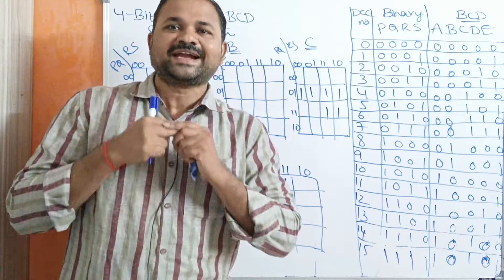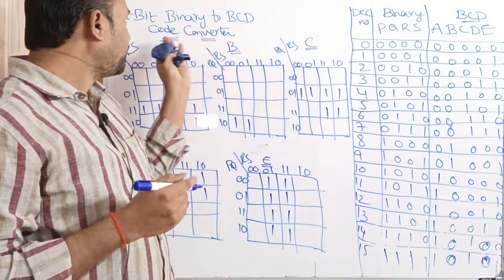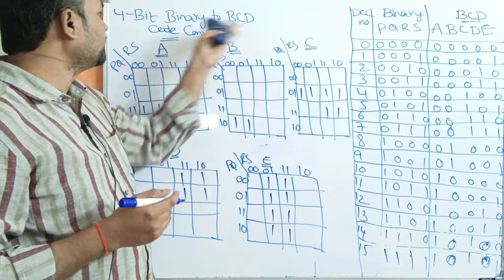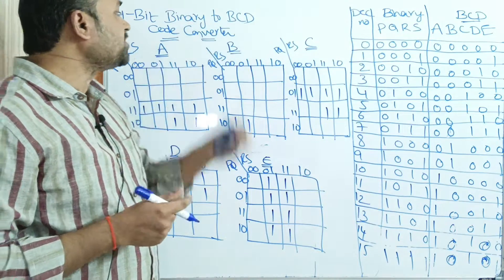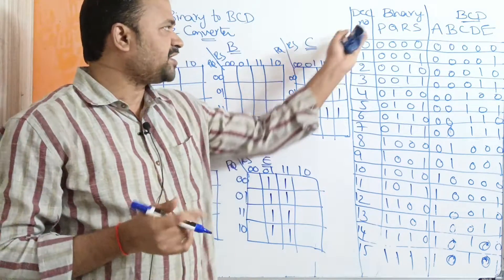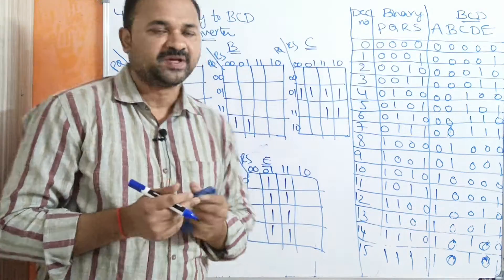Now, let us discuss about 4-bit binary to BCD code converter. First, let us see the truth table.